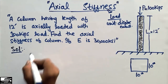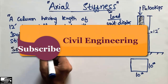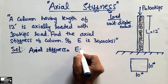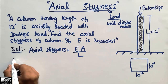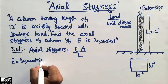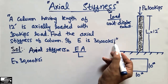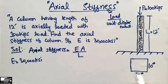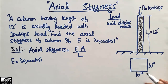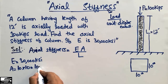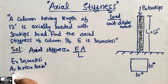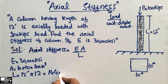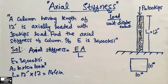The axial stiffness formula is: K = EA / L. E is given as 30,000 KSI. The area of the column can be found from the cross-section which is 10 by 10, so area equals 100 square inches. The length is given in feet, so we convert: 12 feet multiplied by 12 gives 144 inches. All units are now in kips and inches.